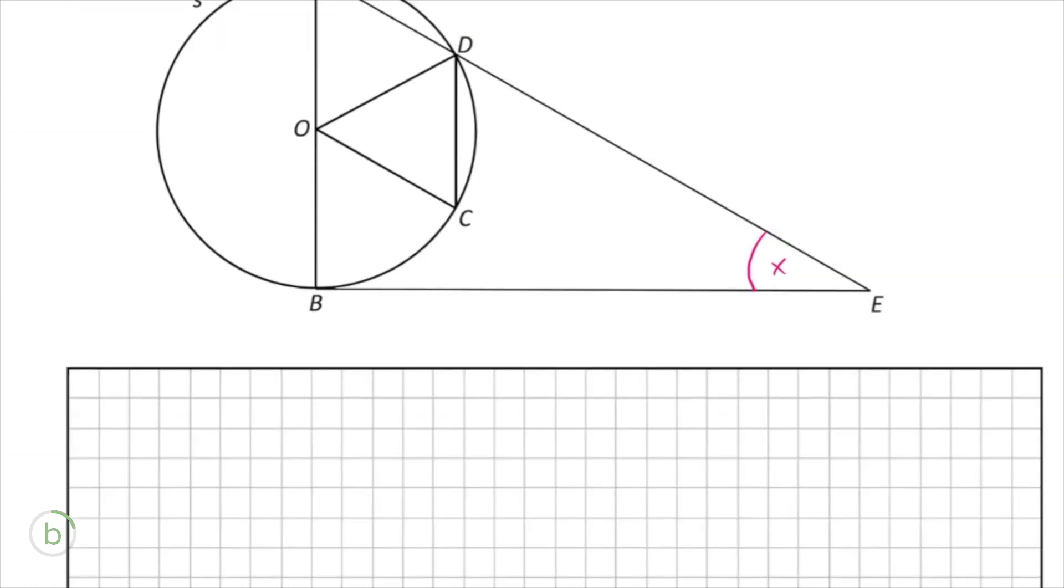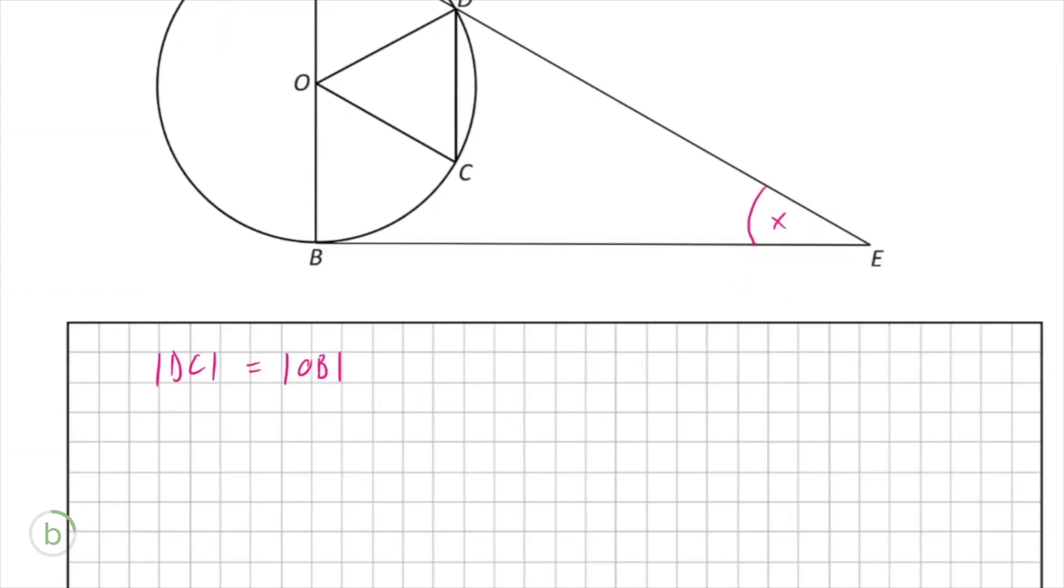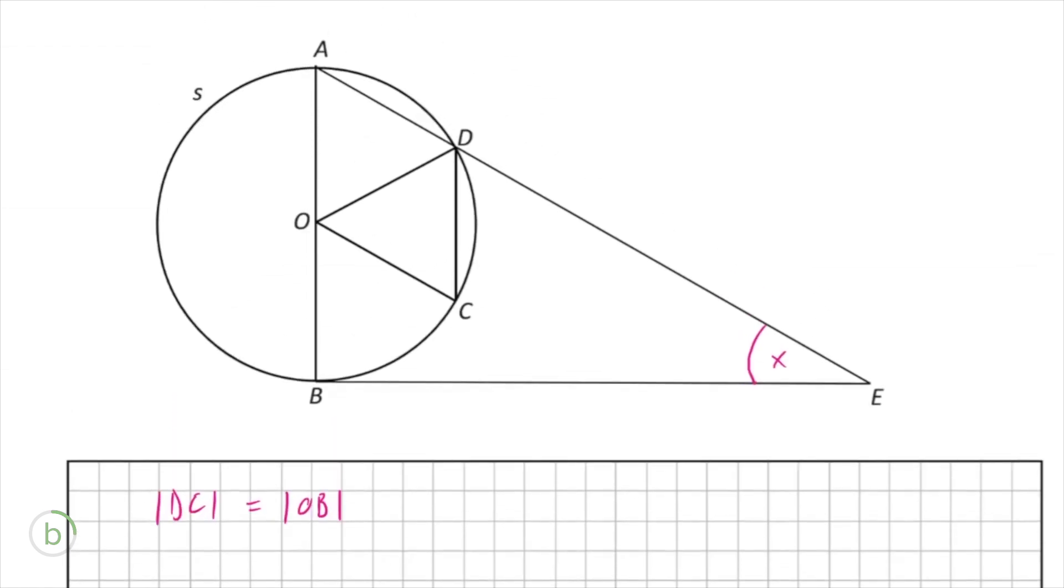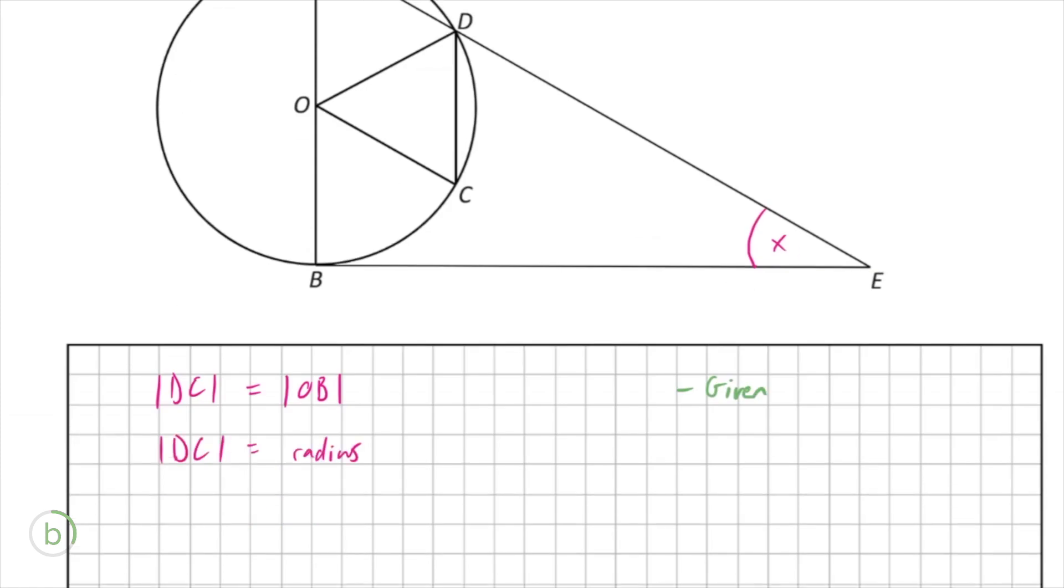So the first thing we're going to note is that DC is equal to OB, and we're told that DC is equal to half AB. And because AB is the diameter and OB is the radius, OB is equal to half of AB also. So OB is also equal to half of AB. So that's just given. So we know that DC is also the length of the radius.